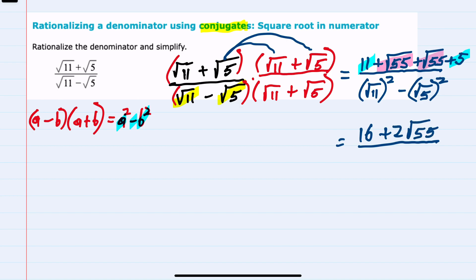In the denominator, squaring the square root of 11 gives me just 11, minus squaring the square root of 5 gives me just 5.